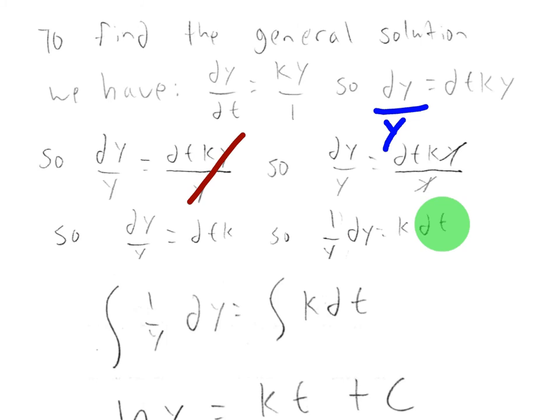And we put the k in front of the dt. In other words, we move it to the front. This way, we can now integrate both sides. So I'm going to integrate the left and integrate the right.